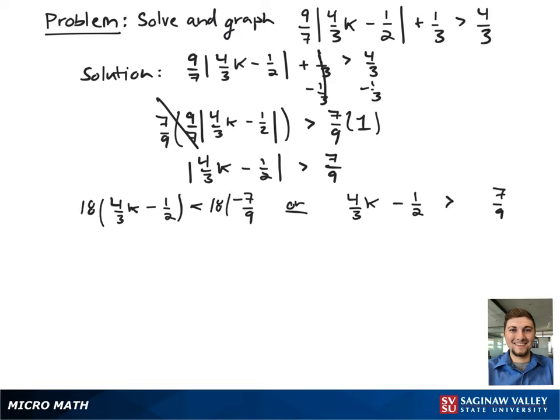First, we're going to multiply out the left hand side of the equation by 18 to get rid of our fractions, and this gives 24k minus 9 is less than negative 14.